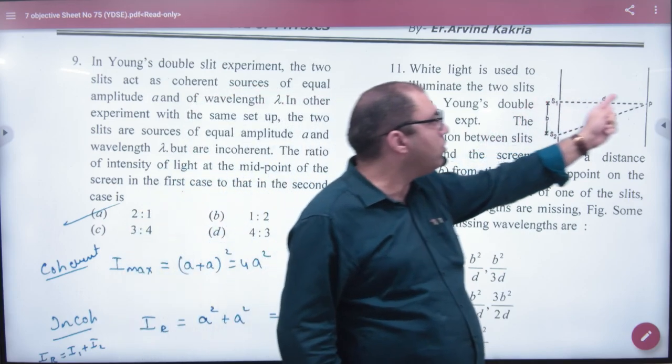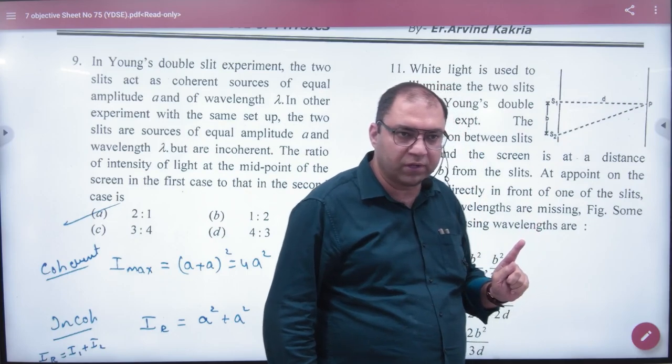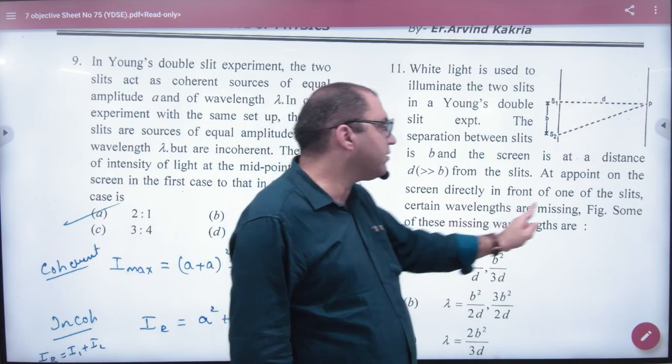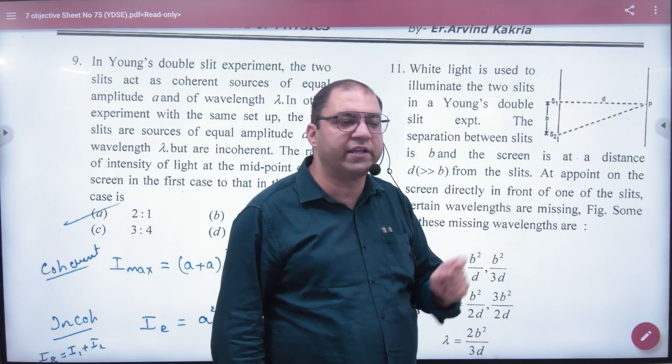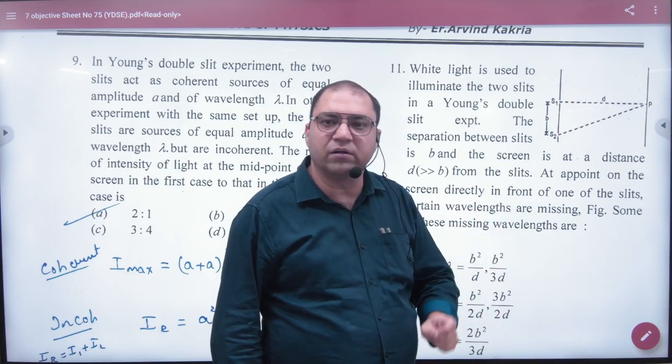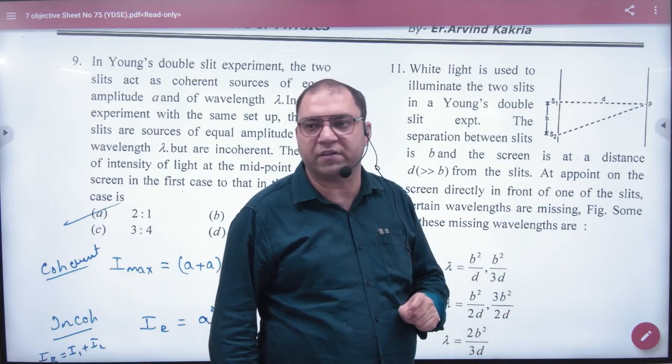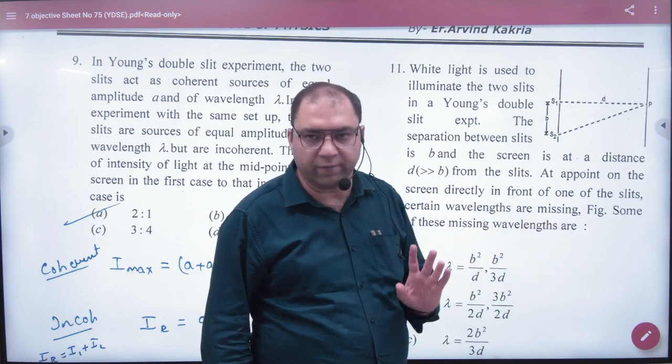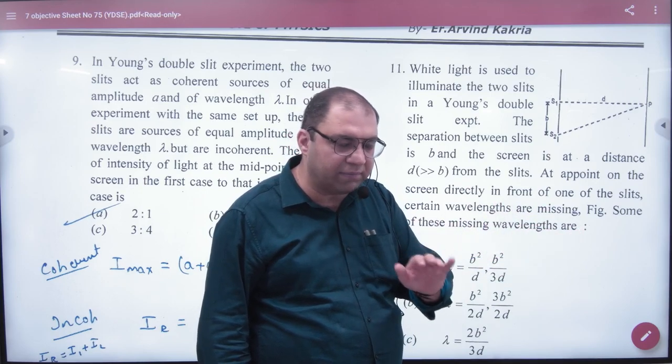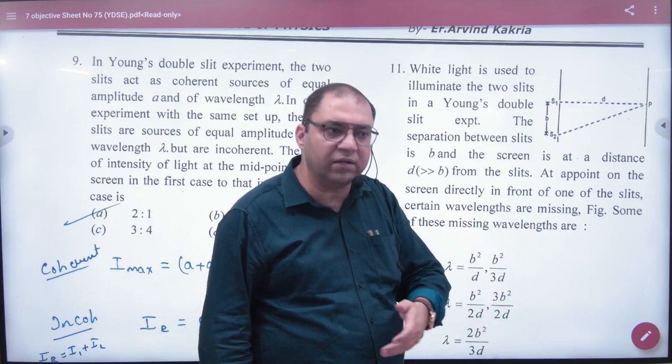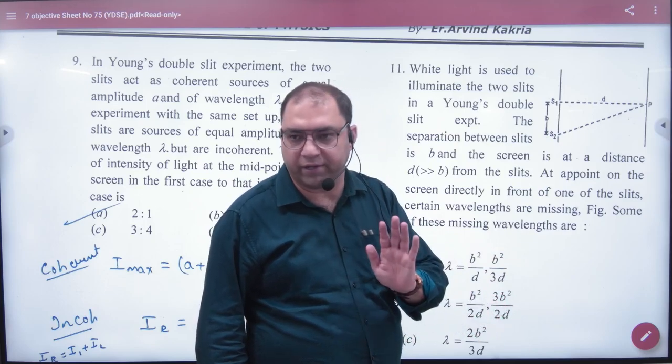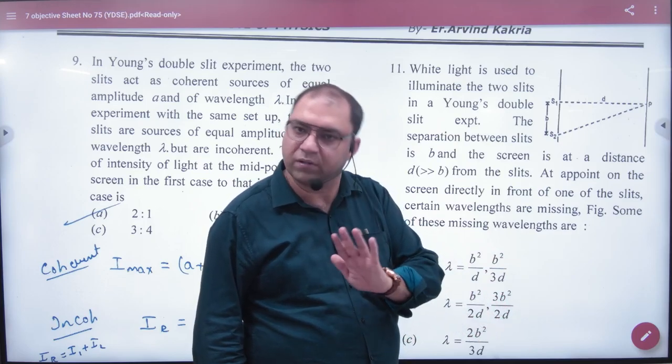In this point, wavelengths are missing. Wavelengths are missing means that there is destructive interference here and there will be darkness. It is a minimum point. Wavelength is missing means destructive interference or a minimum point. It is not a maximum, it is a minimum.